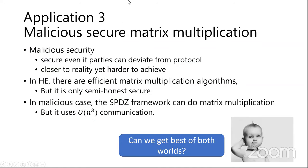The third application is malicious-secure matrix multiplication. In secure computation, semi-honest security means parties follow the protocol but can try to learn more from the transcript. Malicious security means the protocol must be secure even if parties arbitrarily deviate from it — this is closer to reality but harder to achieve. In homomorphic encryption, there have been many proposals for efficient matrix multiplication, but these are only secure under the semi-honest setting.